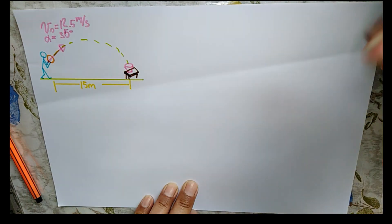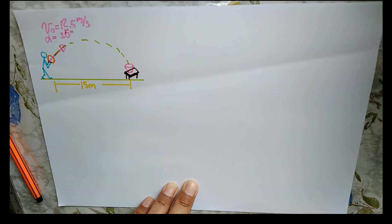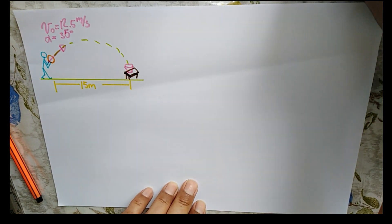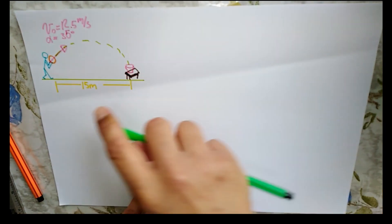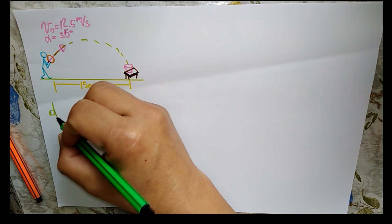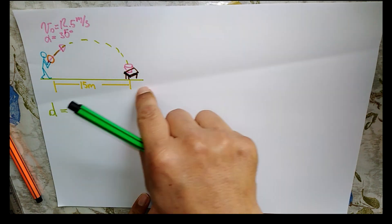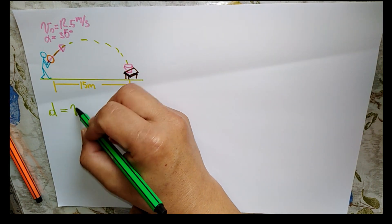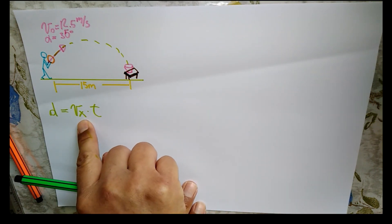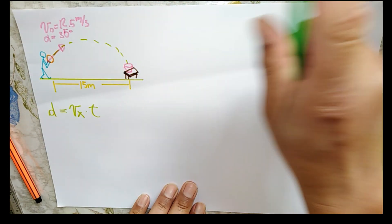Entonces averiguaremos qué pasó, si llegó o no llegó la pelota al recipiente. Para eso necesitamos saber si recorrió los 15 metros. Sabemos que la distancia sobre el eje de X es igual a velocidad en X por tiempo. Necesitamos la velocidad en X y necesitamos tiempo y solo tenemos esos dos datos.